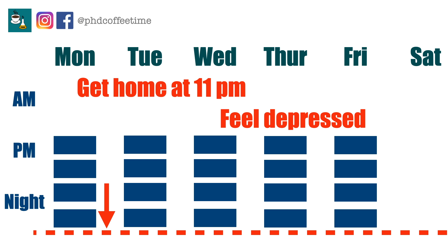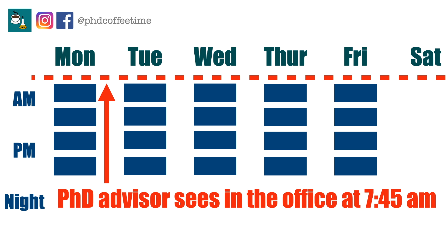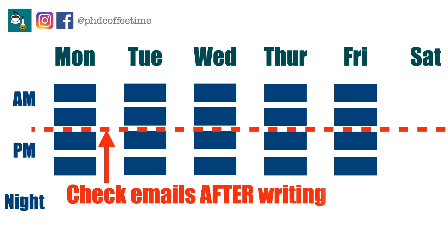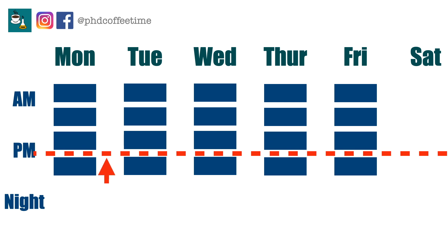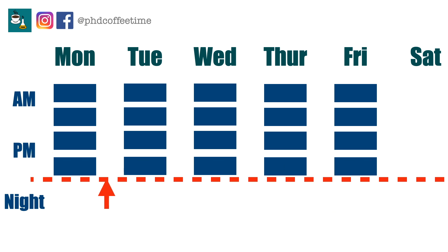If you start your day at 7:45 a.m., your advisor might see you in the office, so maybe they'll be nicer to you. In the afternoon, you'll respond to emails knowing you already had a long productive morning. Moving on in your day, you might find exciting events like a regional conference free for PhD students — because you showed up and took time for coffee with other PhD students. At the end of the day, finishing around 6 p.m., you might see a nice sunset, go to a yoga class, join dinner, and have a social life to support you through the marathon of a PhD.